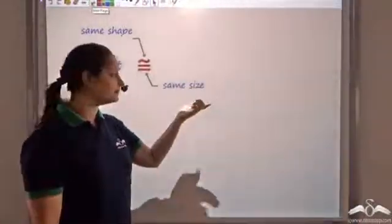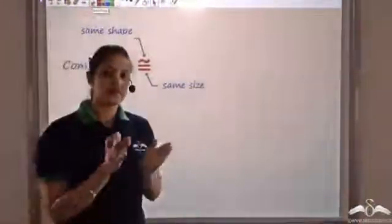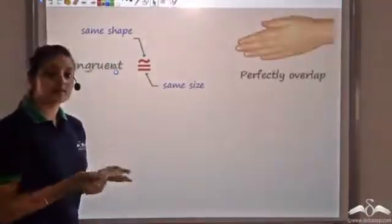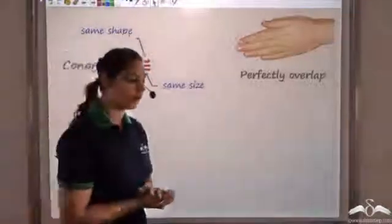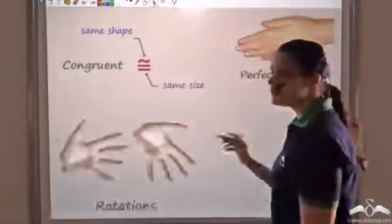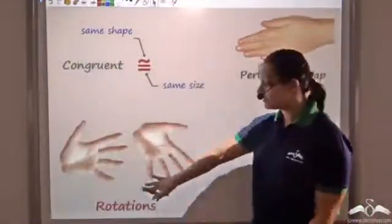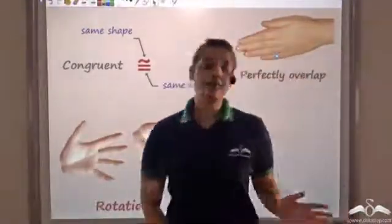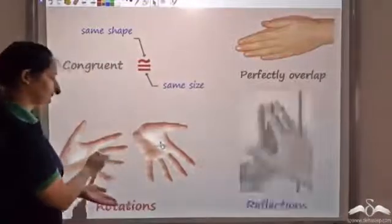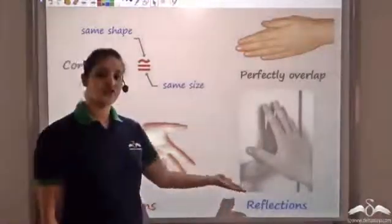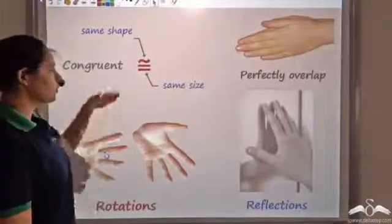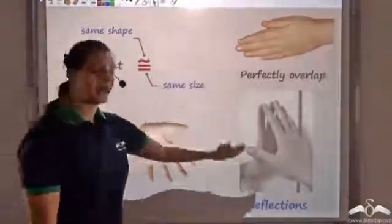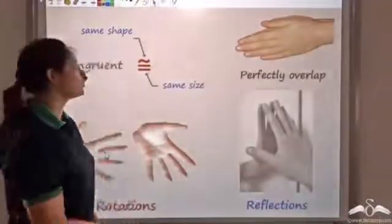To prove congruency, if things perfectly overlap then they are congruent. Different rotations or orientations of the same thing are also congruent, and mirror reflections are also congruent. So perfectly overlapping, different rotations or orientations, and mirror reflections all give congruent figures.